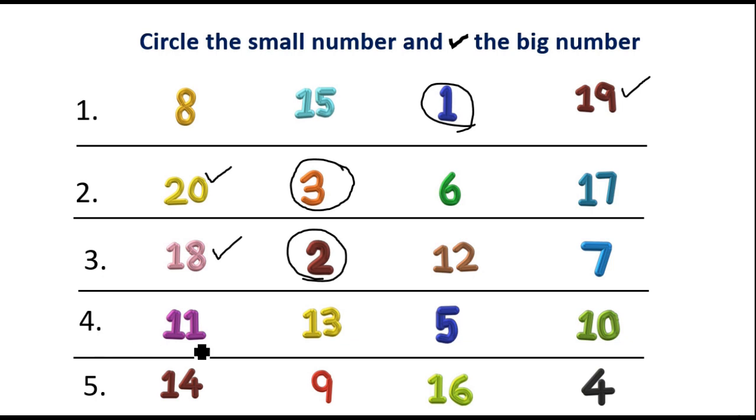Fourth one: 11, 13, 5, 10. Which is small? Yes, 5 is small. So circle 5. Which is big? Yes, 13 is big. So tick 13.